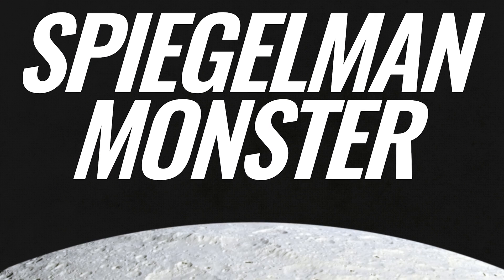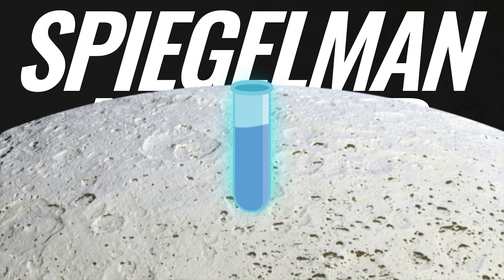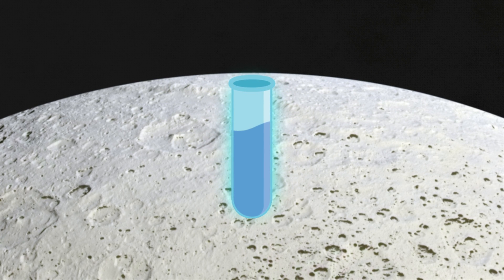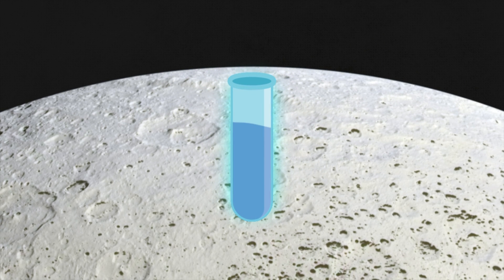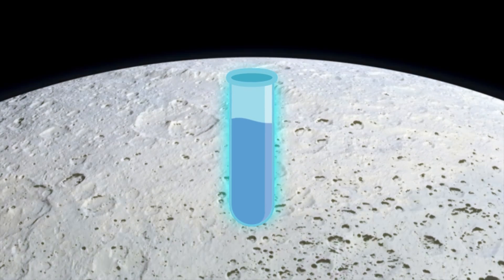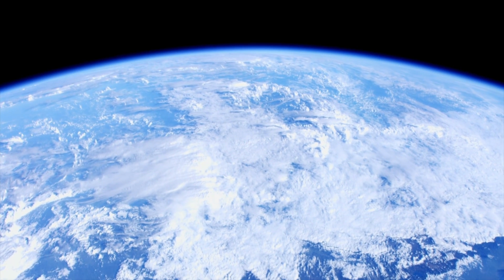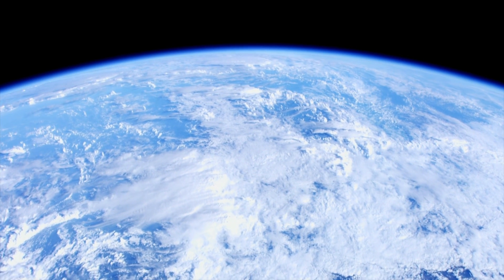The Spiegelman monster evolved in the artificial world of the test tube. It could not replicate if RNA replicase enzyme was not present, limiting its usefulness for describing the beginnings of life. In the early Earth, there would not have been an RNA replicase present to help things get started.